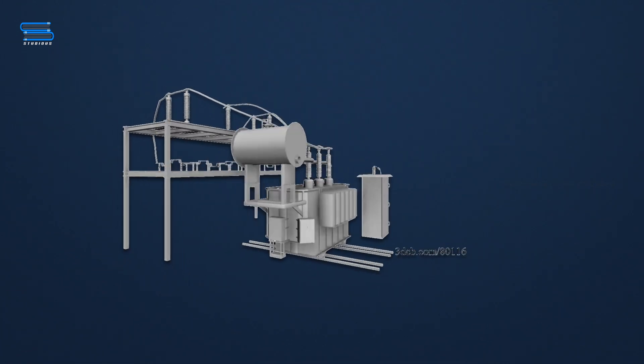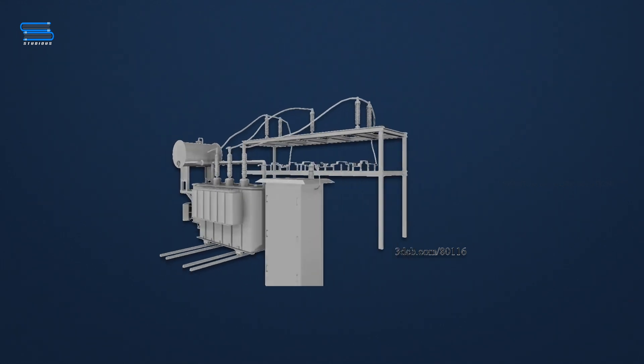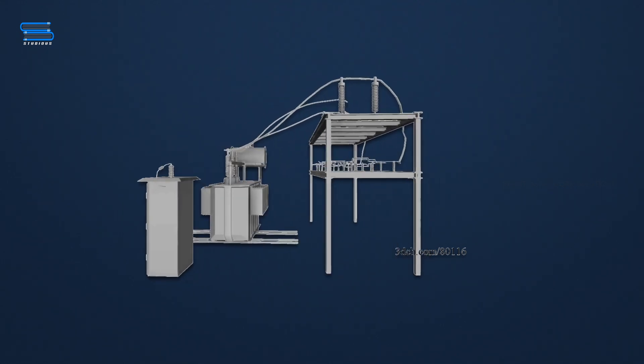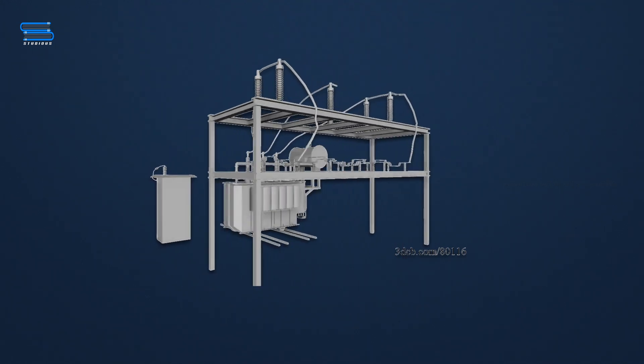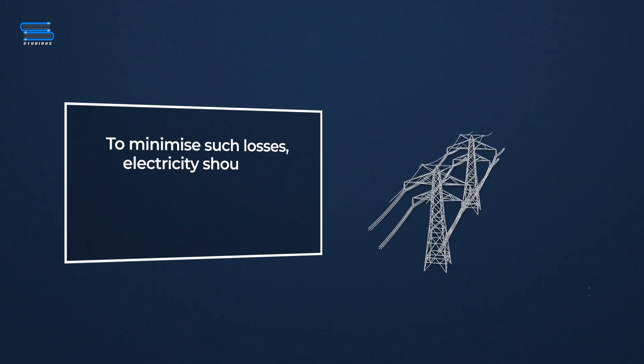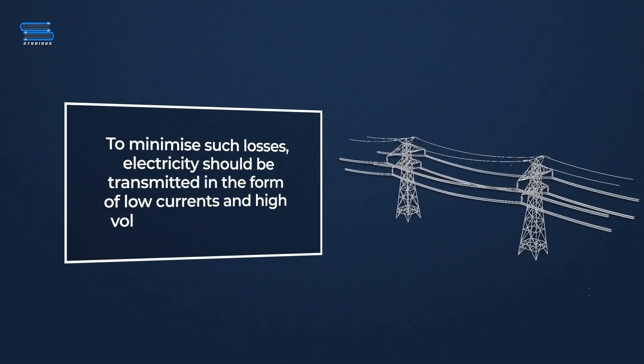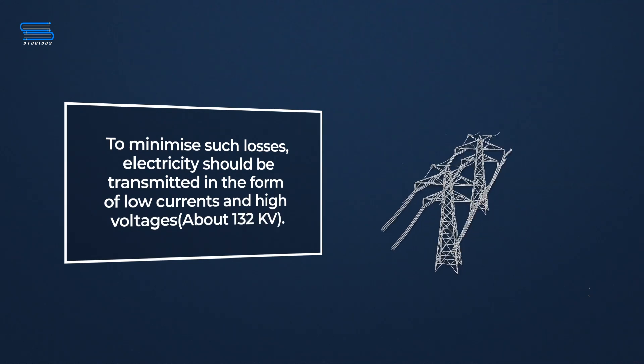So sending large alternating currents and smaller AC voltages through power transmission conductors over long distances results in the loss of electrical energy. To minimize such losses, electricity should be transmitted in the form of low currents and high voltages, about 132 kV.